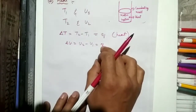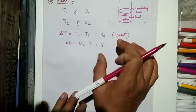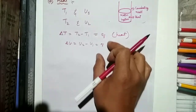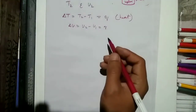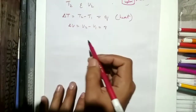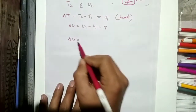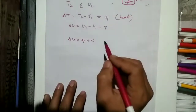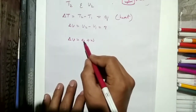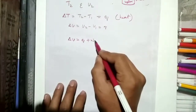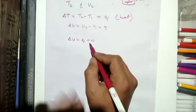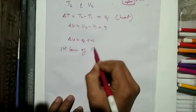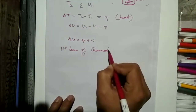In this case we are not applying any work — just heat transfer takes place. But if we also apply work, then ΔU = Q + W. The internal energy change equals the sum of heat and work. This is the mathematical expression of the first law of thermodynamics.